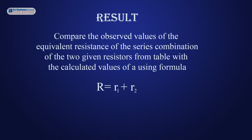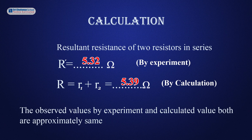The result is: compare the observed values of the equivalent resistance of the series combination of the two given resistors from the table with the calculated values using the formula R equals R1 plus R2. The resultant resistance by experiment is R' equals 5.32 ohm. The resultant resistance by calculation is R equals R1 plus R2 equals 5.39 ohm. The observed value by experiment and calculated value are both approximately the same.